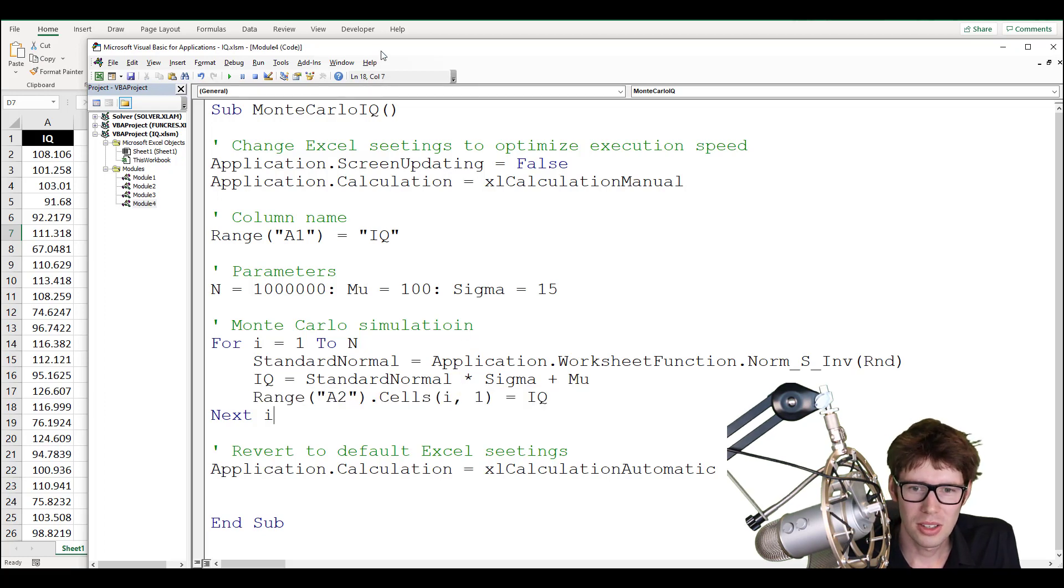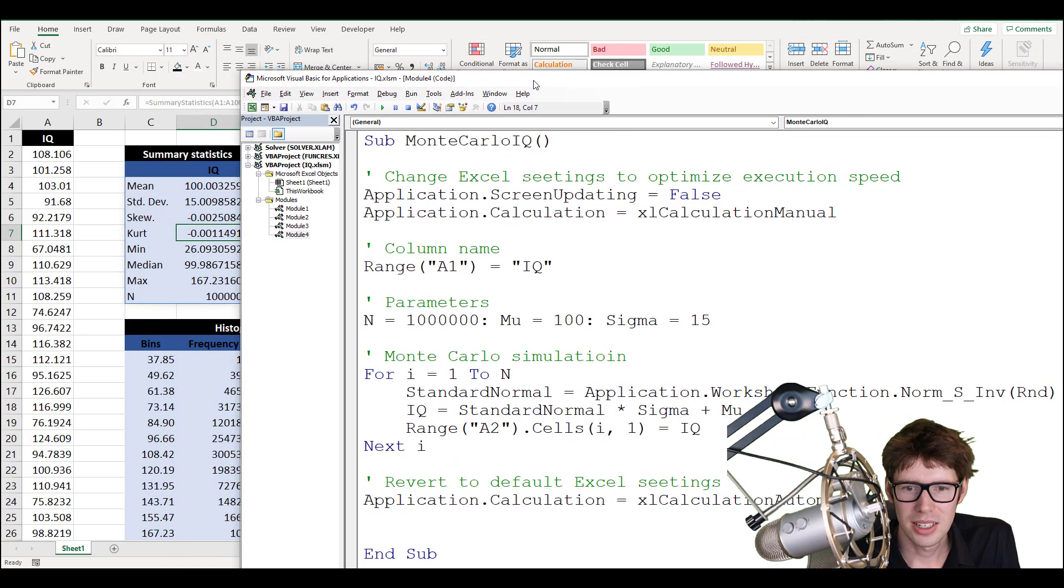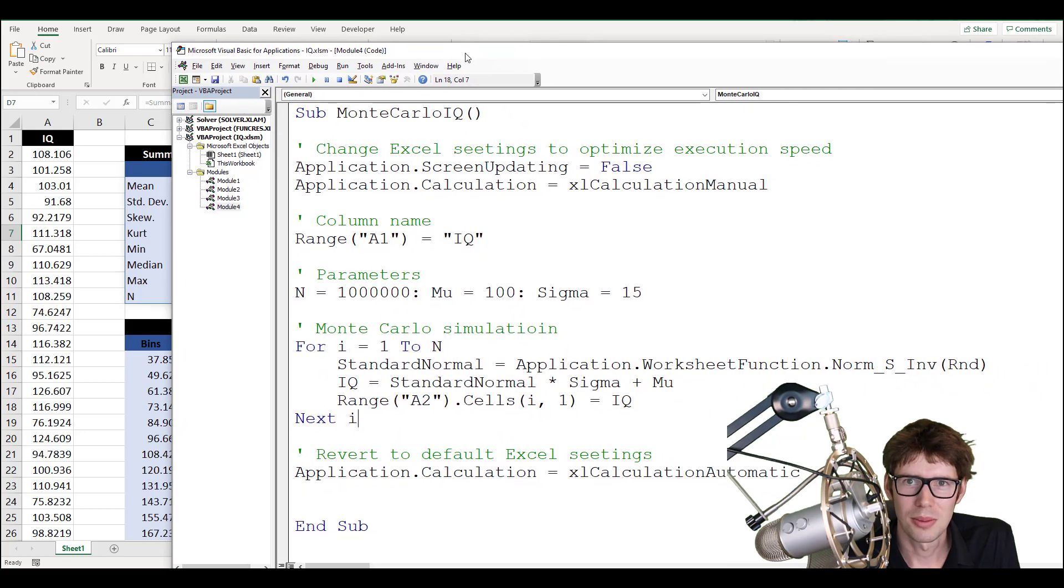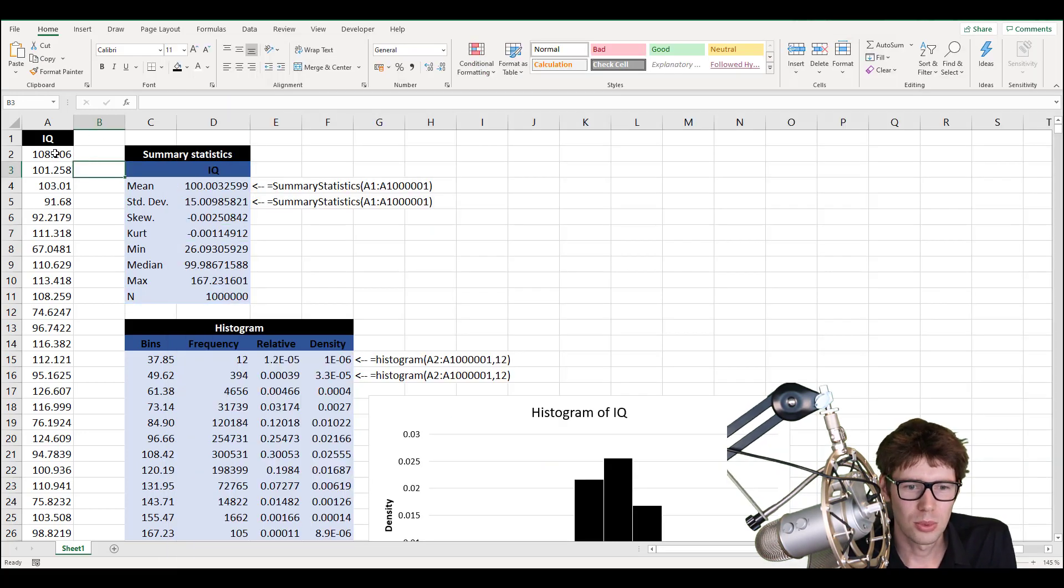So I'm not going to run this script, because a million iterations is still going to take me 30 seconds probably with my computer. Probably twice as long since I'm running this screen recording program. But as you can see, the output is just right here. So that is how you can simulate a normal distribution in Excel using Visual Basic for applications.